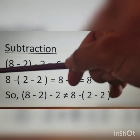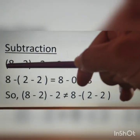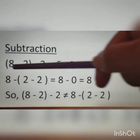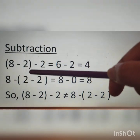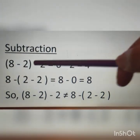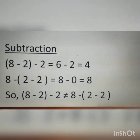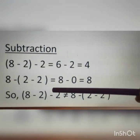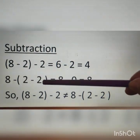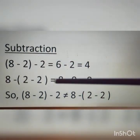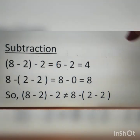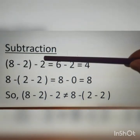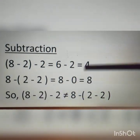Next, examples of subtraction. In (8 − 2) − 2, the bracket is calculated first: 8 − 2 is 6, then 6 − 2 equals 4. In the next line, the numbers are the same but brackets are interchanged: (2 − 2) is 0, therefore 8 − 0 equals 8. Even though the numbers are the same, the values are different after interchanging brackets.